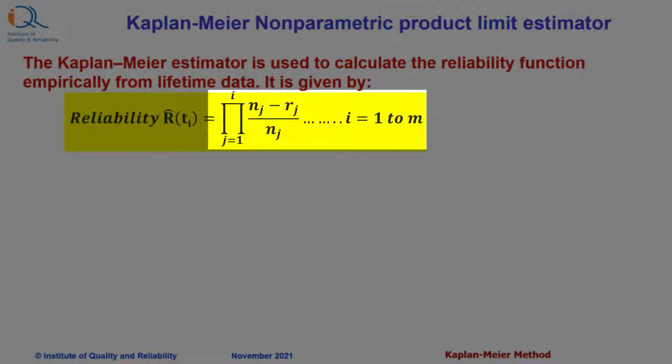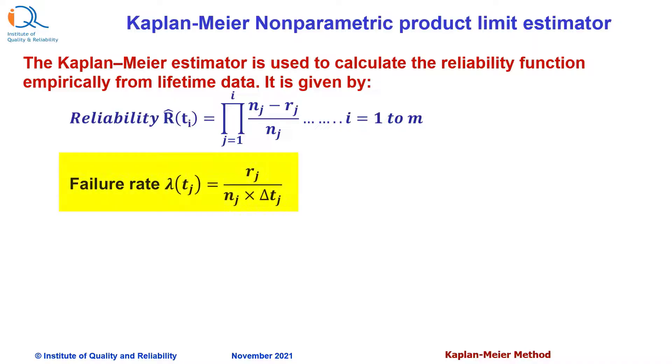And i can vary between 1 to m. So you have to calculate this for every term. There is one more calculation, which is the failure rate at time tj, which can be calculated as rj upon nj into delta tj. That is the difference in time between previous failures and this failure, this step failures.